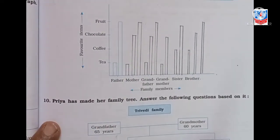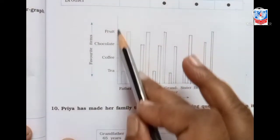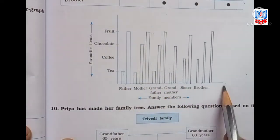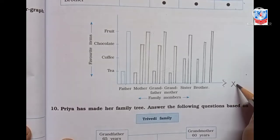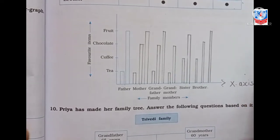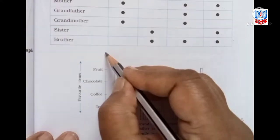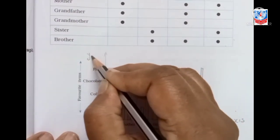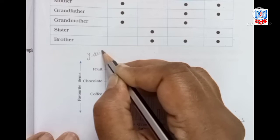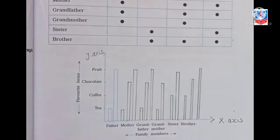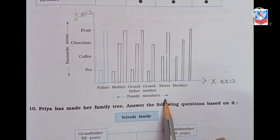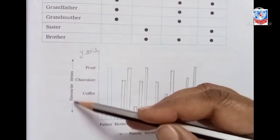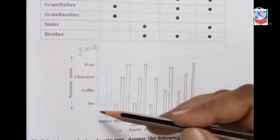Here you have to draw the bar graph. This is the X axis and this is the Y axis. On the X axis, family members are shown. On the Y axis, favorite items — that means tea, coffee, chocolate, fruit, etc.